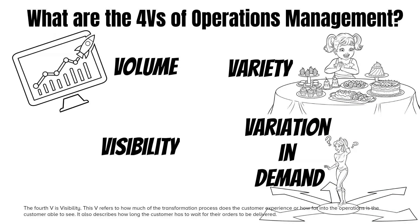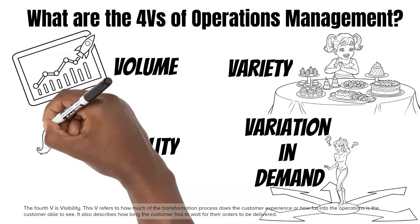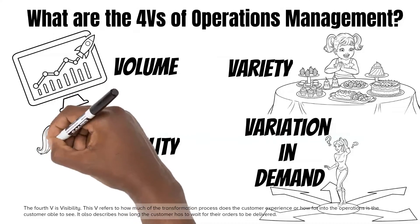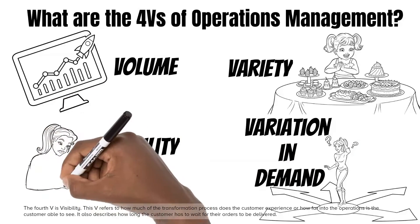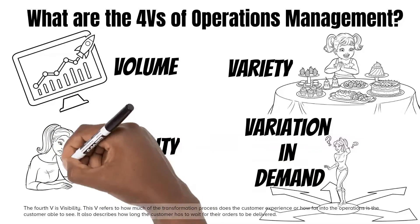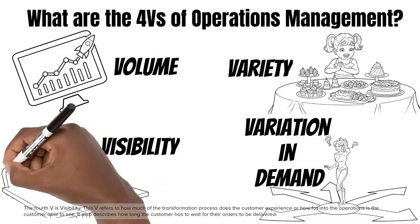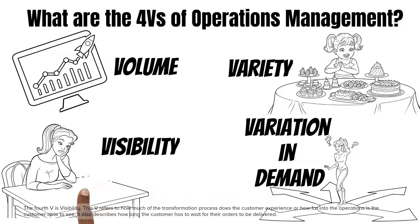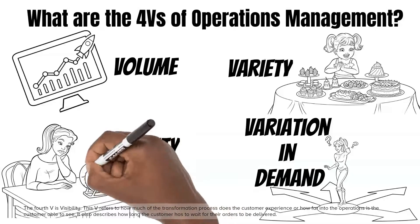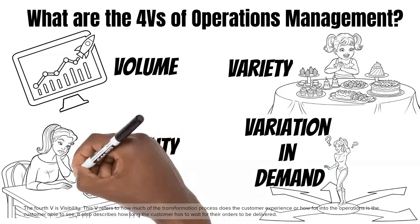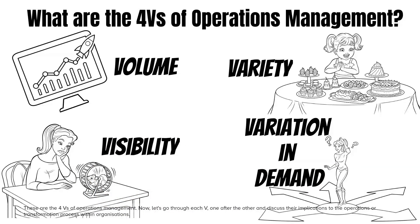The fourth V is visibility. This V refers to how much of the transformation process the customer experiences, or how far into the operations the customer is able to see. It also describes how long the customer has to wait for their orders to be delivered. These are the four Vs of operations management. Now let's go through each V one after the other and discuss their implications to the operations or transformation process within organizations.